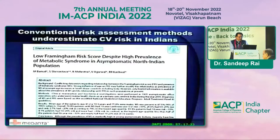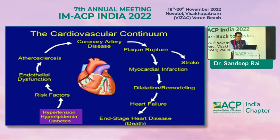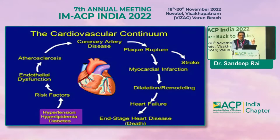This is a study by Dr. Kasliwal from Delhi — he found low cardiovascular risk scores despite high prevalence of metabolic syndrome. Looking at the cardiovascular continuum, high-risk factors of metabolic syndrome like hypertension, hyperlipidemia, and diabetes first lead to endothelial dysfunction, after which the arteries stiffen, then atherosclerosis, coronary artery disease, plaque rupture, and MI.